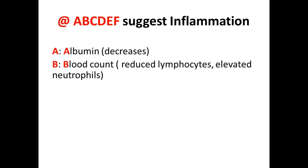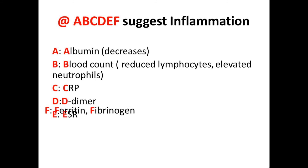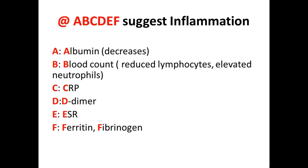C is for CRP. D is for D-dimer. E is for ESR, and F is for Ferritin and Fibrinogen.